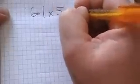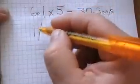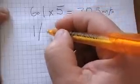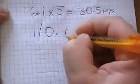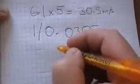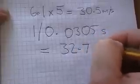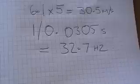6.1 times 5 equals 30.5 milliseconds. To get the frequency we divide that by 1. 1 divided by, well first we have to convert it to seconds, which is 0.0305 seconds. And that gives us an answer of 32.7 hertz. Which if you check the document this oscillator came quite close according to my multimeter.